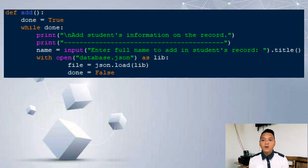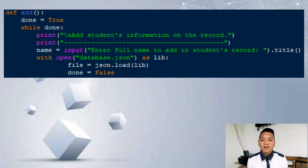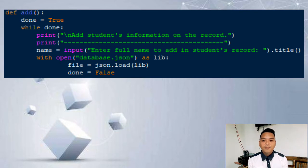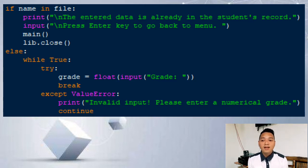The add function will be responsible for adding students in the record. In the def add function, the user will input the full name of the student to be added. The data will be handled by the variable name. The database will be opened in read mode, and it will be loaded into the variable file. If the name of the student is already in the file, the system will say the entered data is already in the record, and the system will go back to the main menu, closing the database using the dot close function.